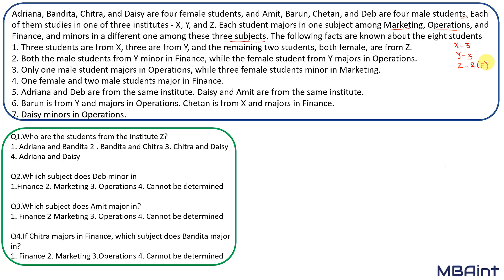In all LRDI questions, what is most important is how you draw the table. If you draw a good table according to the information given, half of your work is done. Let's read the second information: both male students from Y minor in finance, while the female student from Y majors in operations. This is vague and not the key information to start the set.